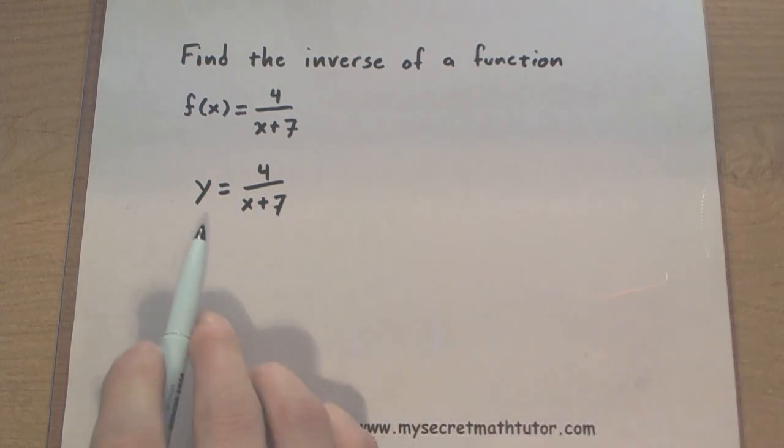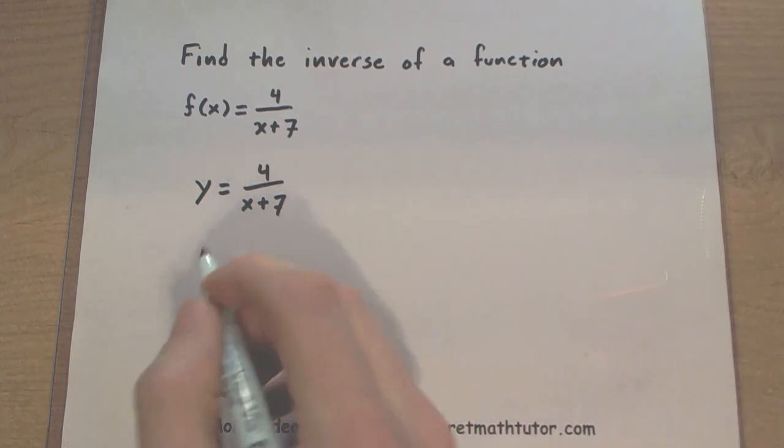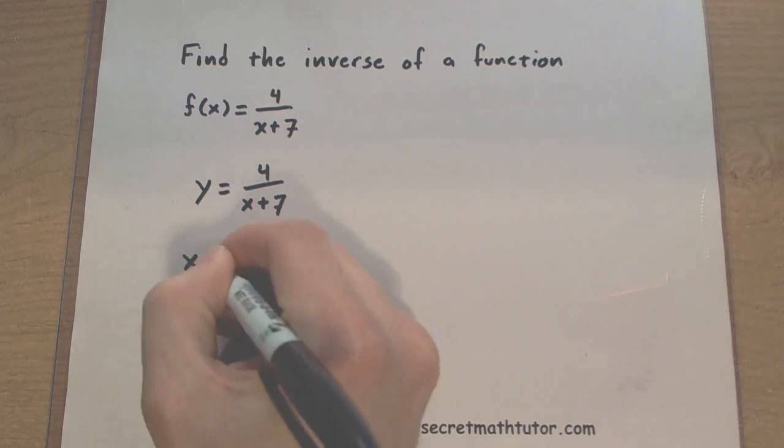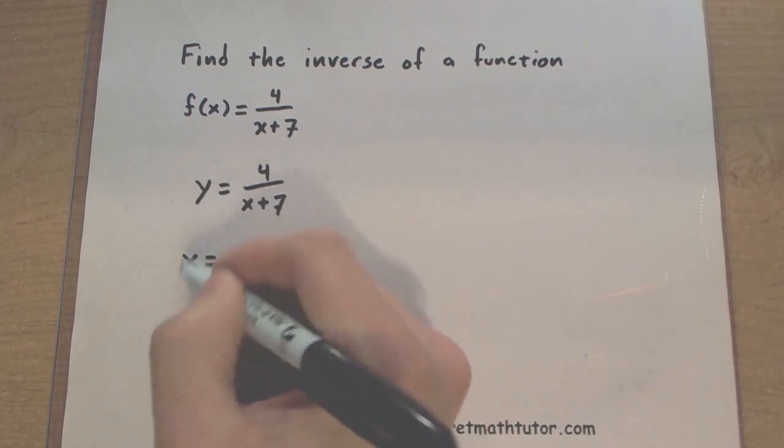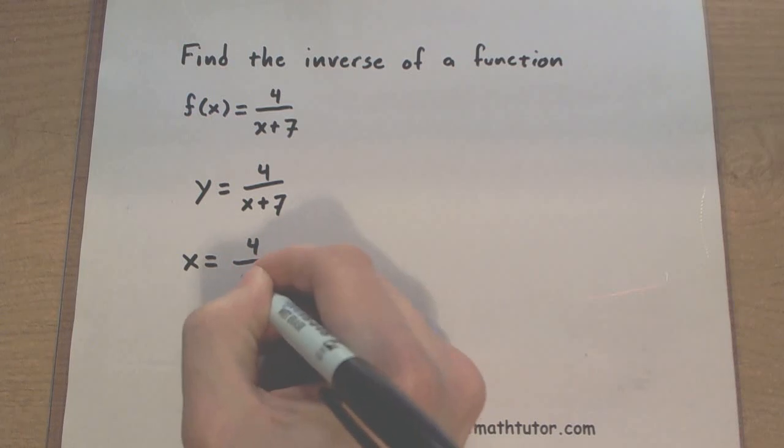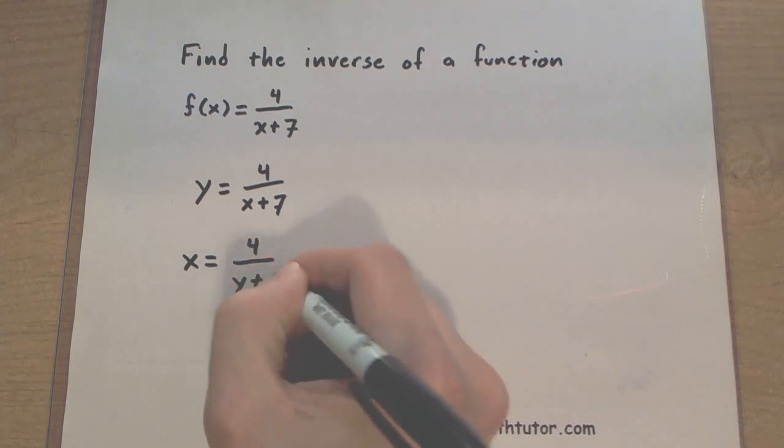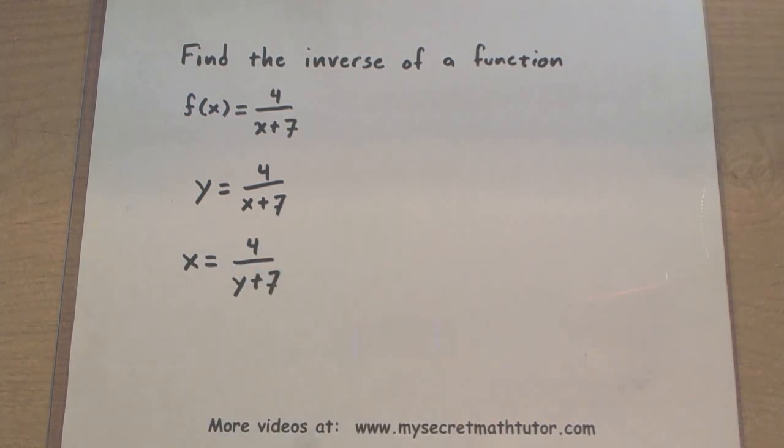Now, let's go ahead and switch the role of x and y by literally replacing y with x, and then we will replace x with y. Okay, so now we have the expression, x is equal to 4 divided by y plus 7.